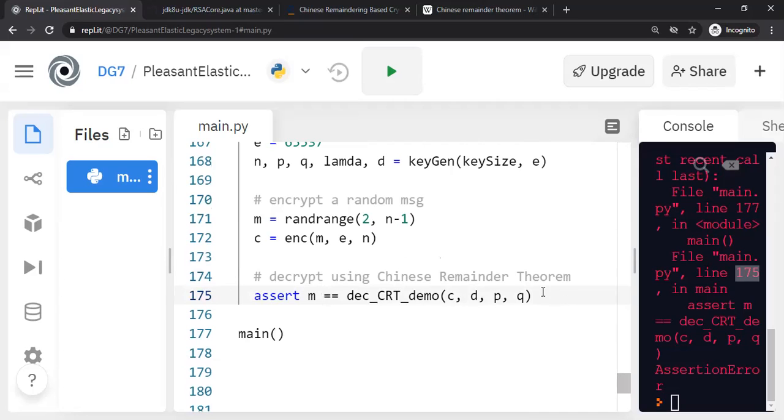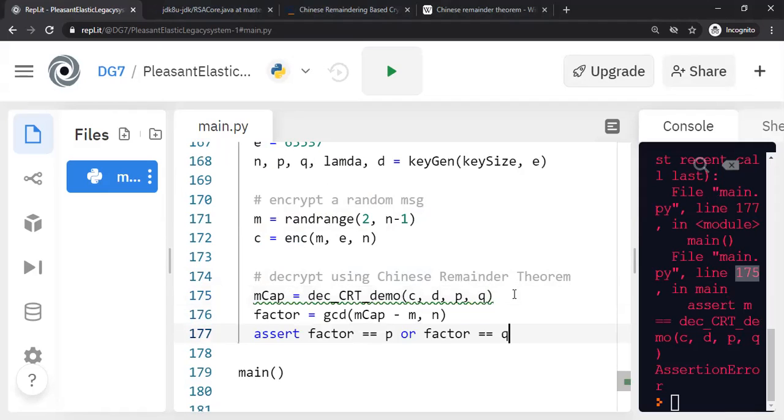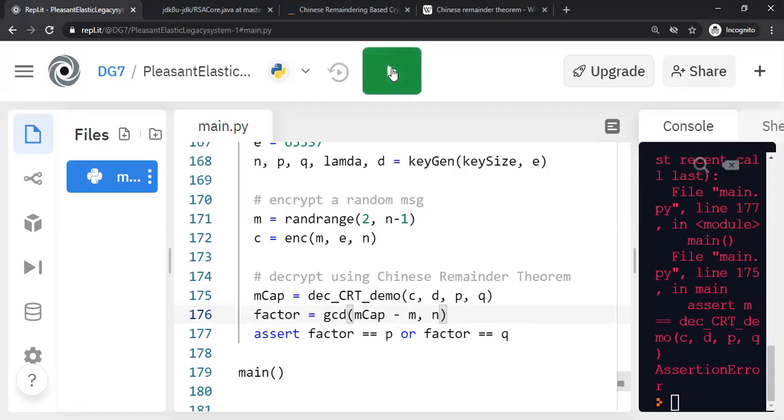Which is expected because we injected a bug. But what we are getting back is not m again, we get something m with some extra data. Now we can apply the attack that I just talked about. All I'm going to do is essentially take the data that I'm getting back, which I will call it m cap. This is the error message in it. And I'm going to do m cap minus m, because I am the one who chose the m. And I will compute the GCD and check whether I get a factor p or q secrets. Yeah, you see the assertion passed, that means I got the factor.